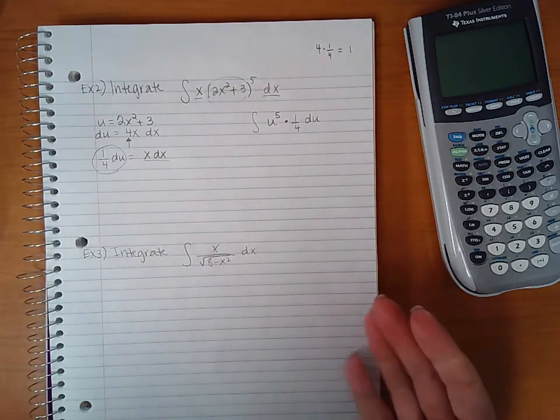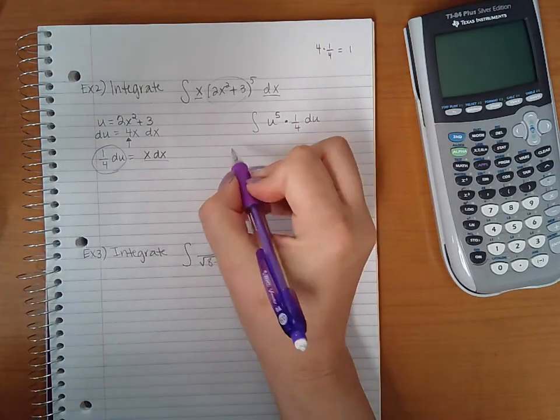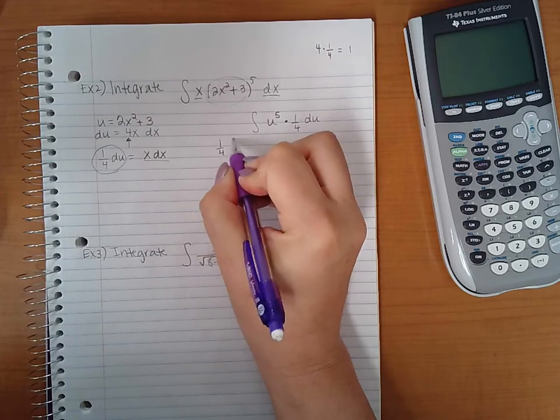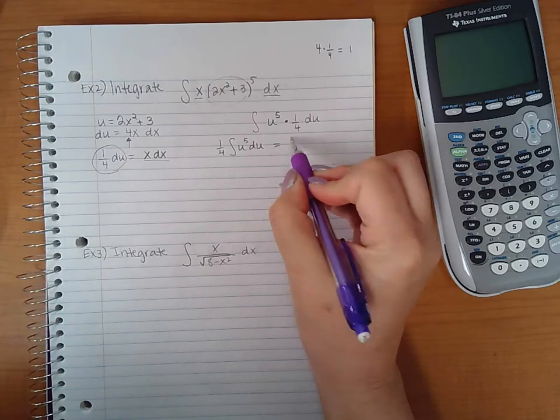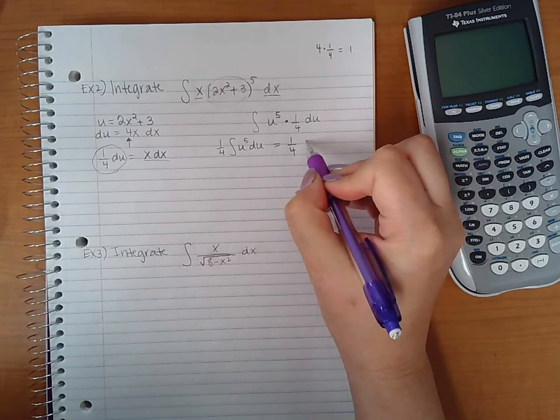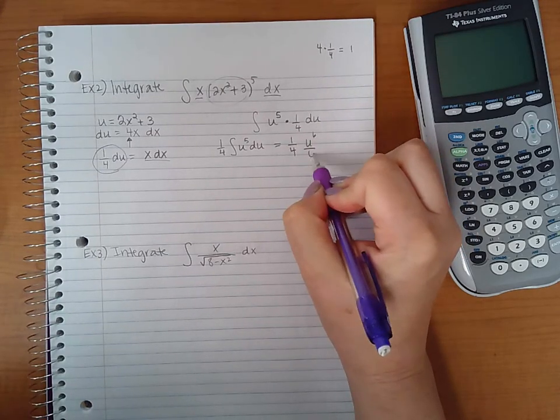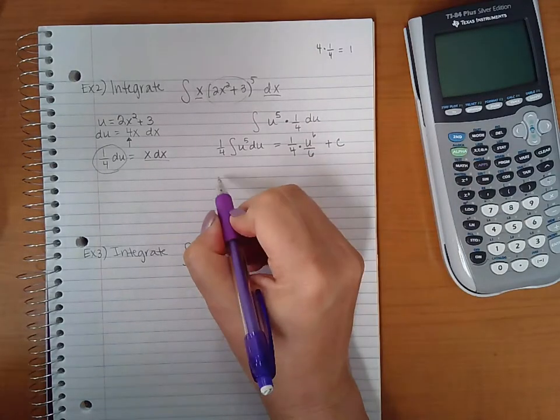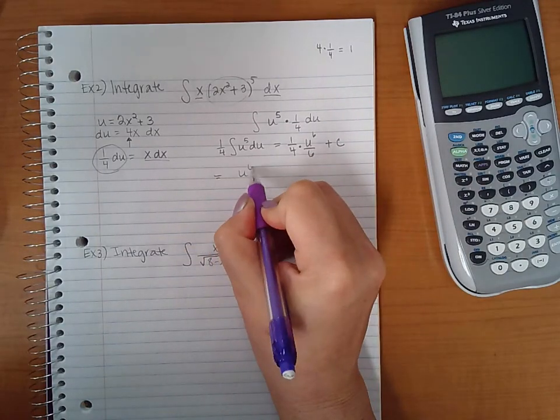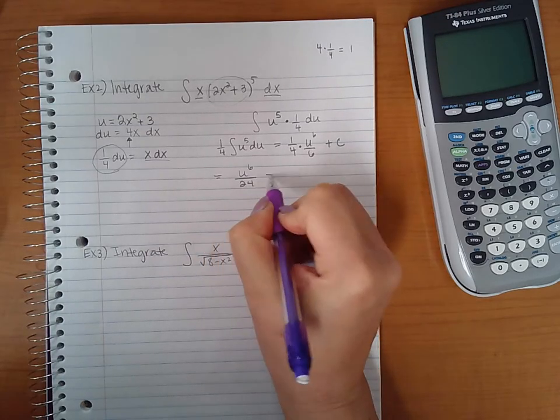Now we know by our integration properties that we can take out the constant multiplier. So we end up with this integral. And that is just nothing more than the power rule applied. So we get u to the 6 divided by 6 plus c. Then if I simplify that there, I get u to the 6 over 24 plus c.